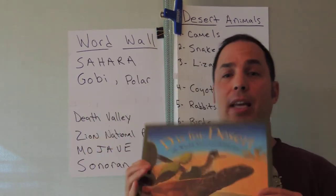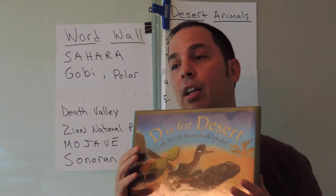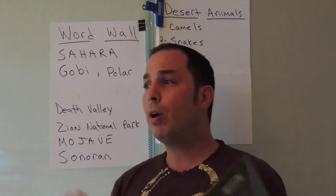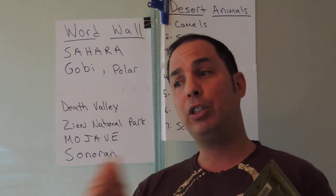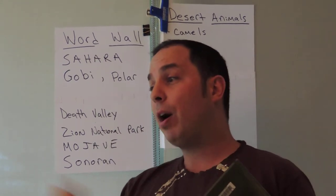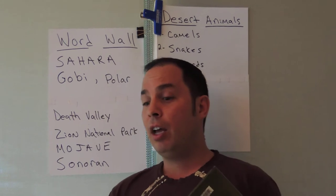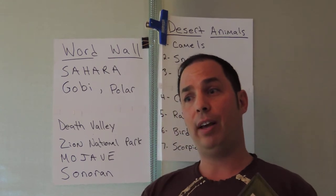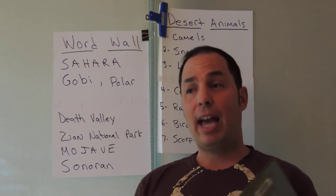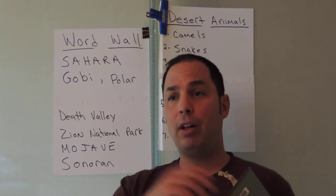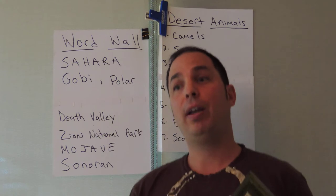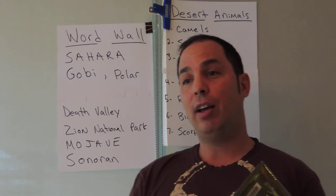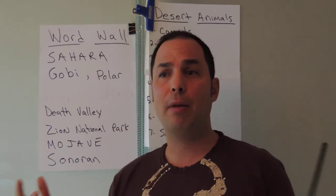Today's read aloud is going to be on 'D is for Desert.' I thought it would be a great topic since we live out here in Phoenix, Arizona and we live in the desert. So what do we already know about the desert? Make sure you raise your hand — no calling out. Jen says there's hot weather. Maria says it doesn't rain a lot in the desert. Chris says there are a lot of different cacti in the desert. Michael says there's sand everywhere.